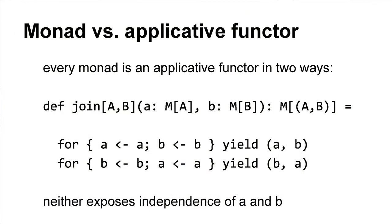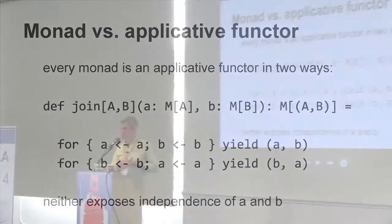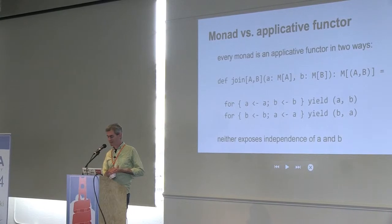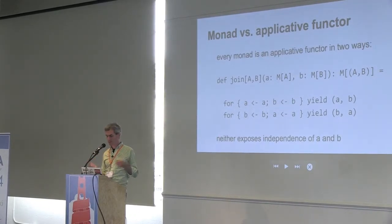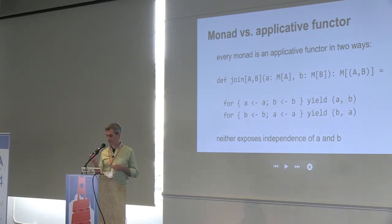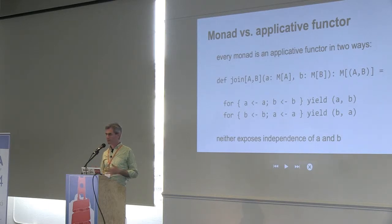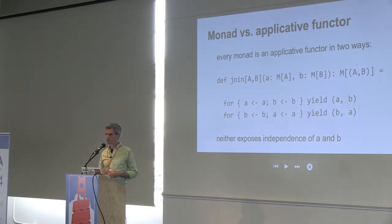Because I put this in the title of my talk, I wanted to say one thing about the difference between a monad and an applicative functor. You may know that every monad can be an applicative functor in two different ways. If you want to join two things, you can sequence them — the first then the second, or the second then the first — using the monadic composition, the flatMap. But we don't actually want either of those because we want these things to happen concurrently. That is the key difference: if you just take a monad and turn it into an applicative functor, you're not exposing the independence of these two parts. But that's really crucial to what we're doing here, because we want to be able to batch across those two parts — and so we don't want to sequence them.